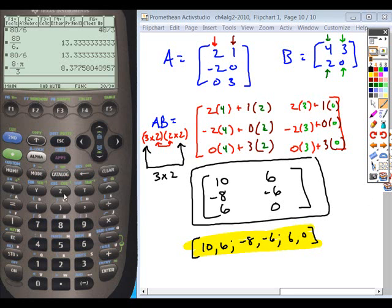If we type in our matrix here, so we use our squared off brackets, and then 2, 1, semicolon, and then negative 2, 0, semicolon, and then finally 0, 3, close it off.